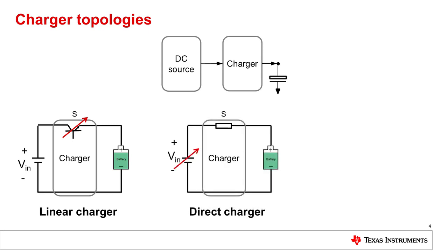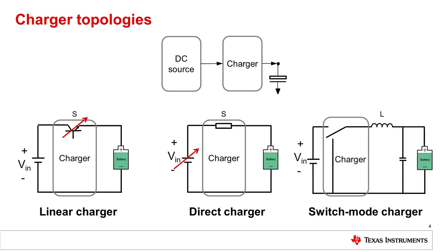A similar device can be constructed by using a simple switch that connects the input supply to the battery. In this case, the input supply must be able to change its output in order to regulate the charge current and voltage. Finally, we can use a switch mode charger coupled with an LC low-pass filter to regulate the charge current and voltage regardless of the input supply. As will be shown, this circuit can be rearranged to achieve higher or lower output relative to the input voltage.